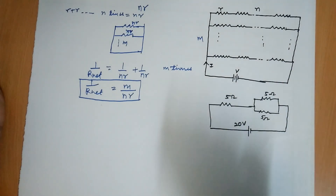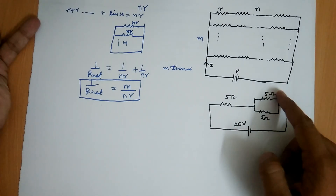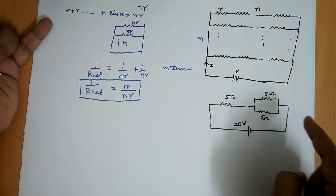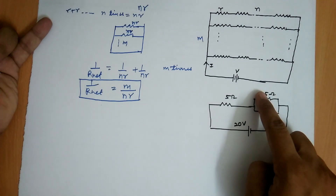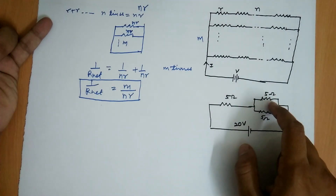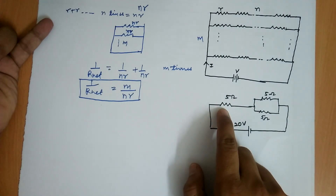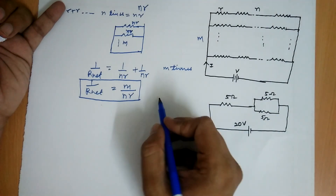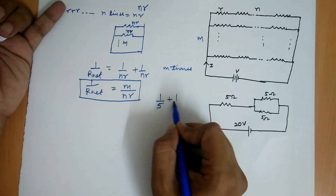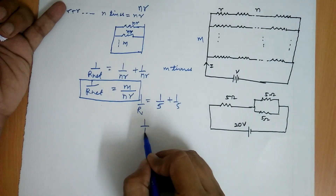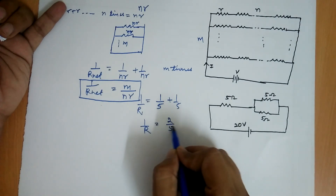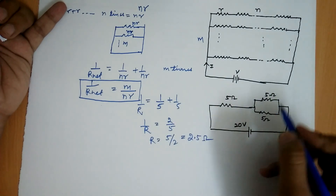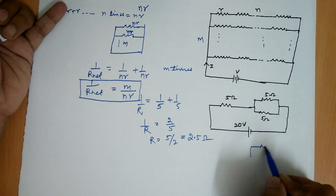First, analyze the given circuit. We have two resistances in parallel, and that parallel combination is in series with the 5 ohm resistance. So first we solve the parallel combination. We get 1 by R equals 1 by 5 plus 1 by 5, which is 2 by 5. Taking the reciprocal, R equals 5 by 2, which is 2.5 ohm.